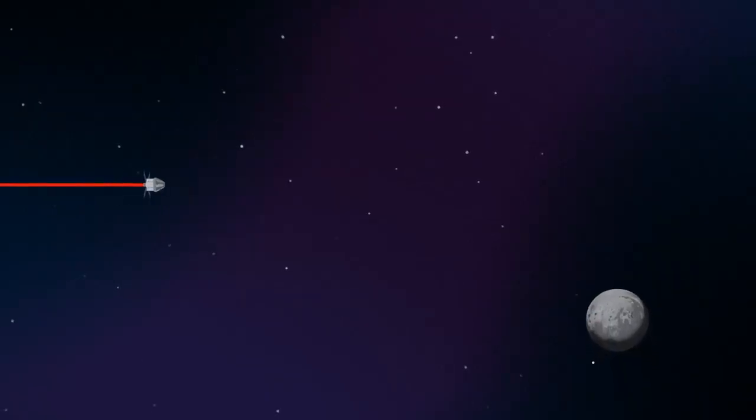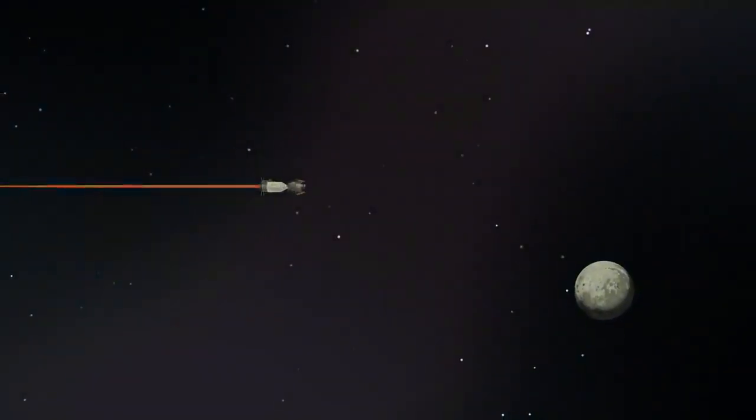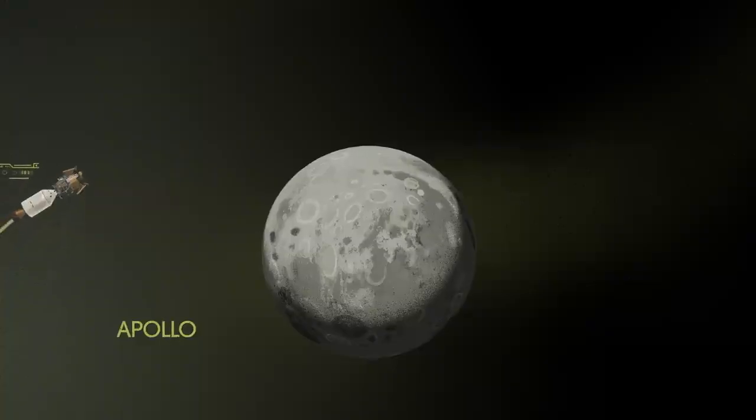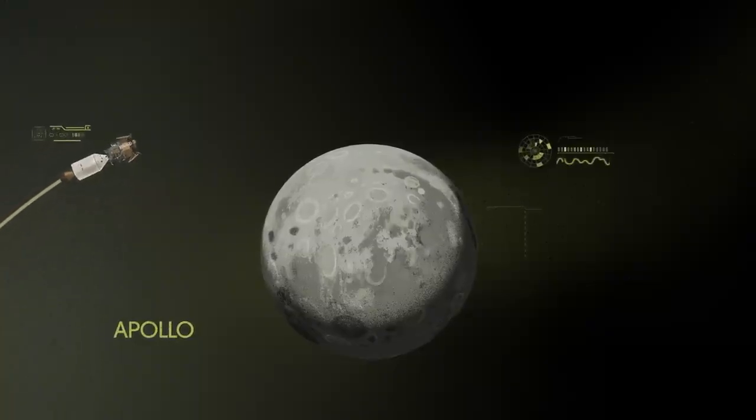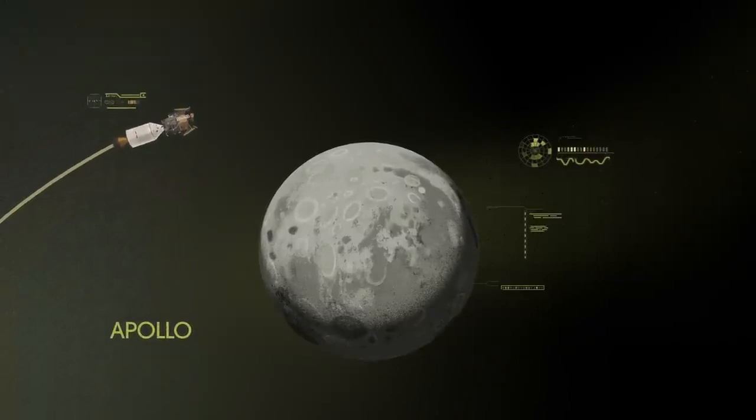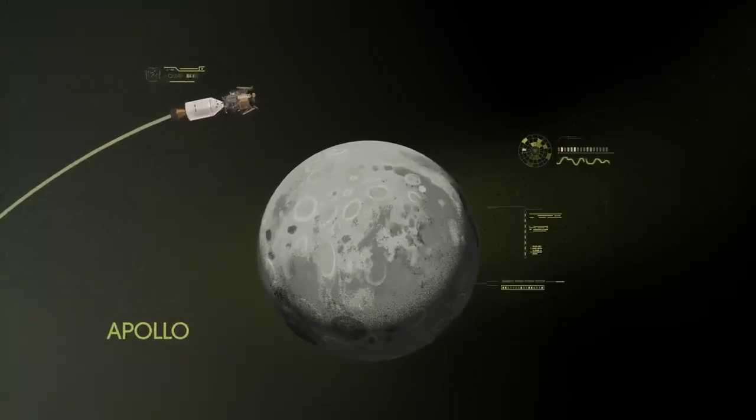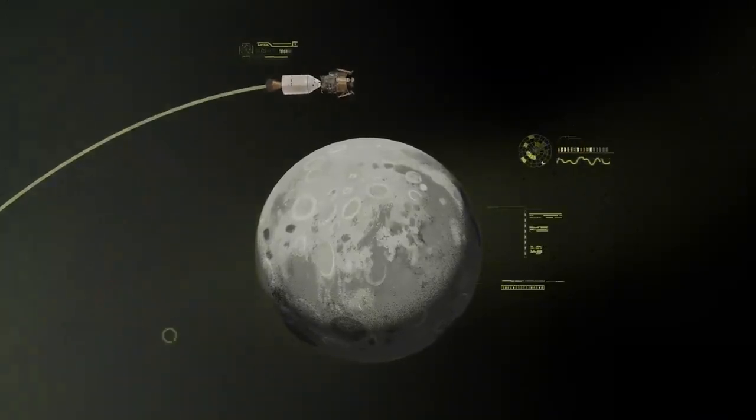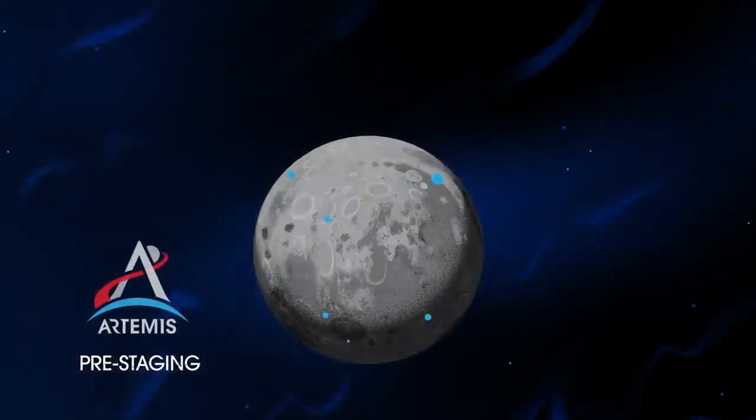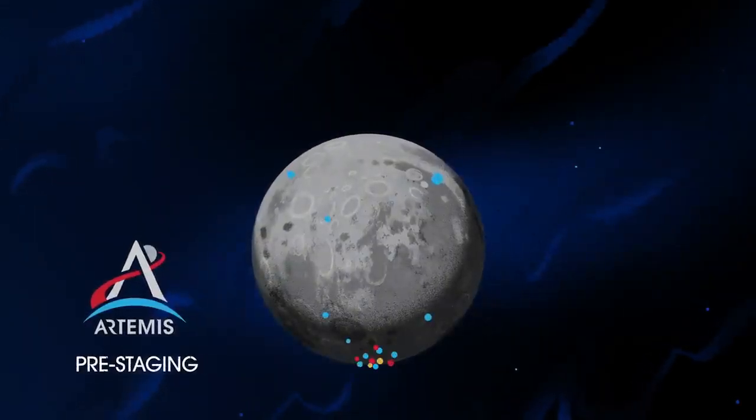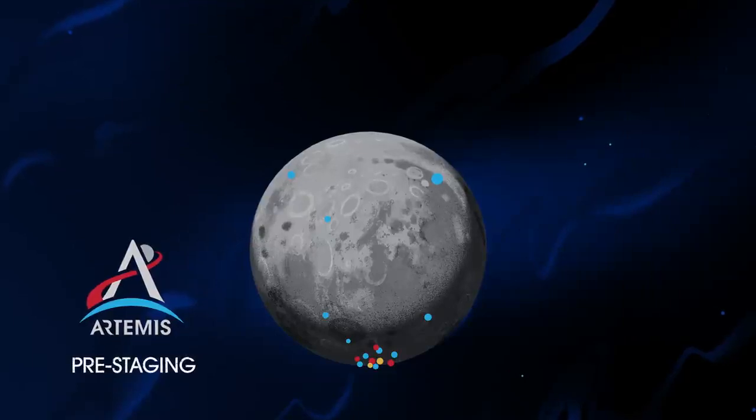Approaching the Moon, we see the fundamental differences between Artemis and Apollo. Instead of requiring Orion to serve as an expendable lunar command module or to carry a constrained lunar lander, the Artemis missions will take advantage of a different approach: pre-staging.